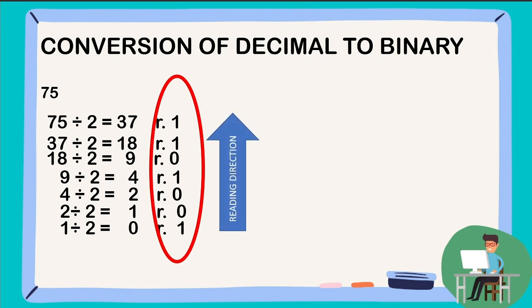And the value of 75 in binary is 1001011.